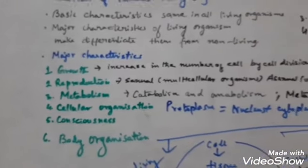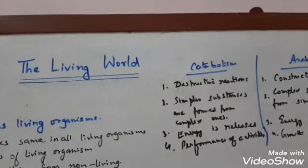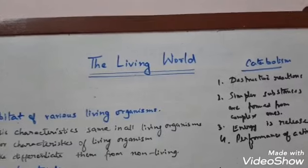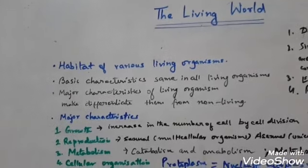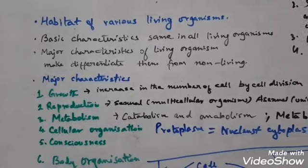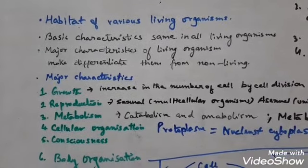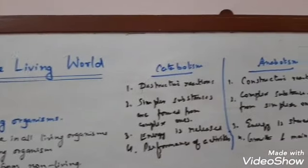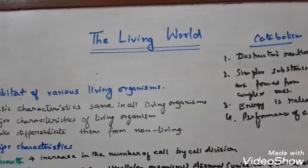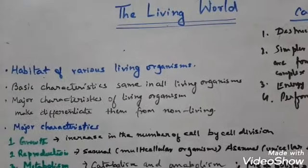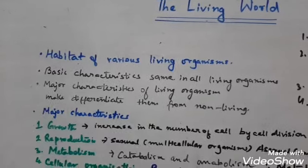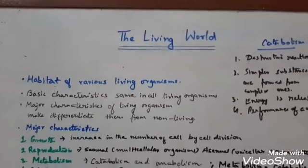I hope you understood the introductory part of Class 11 Chapter 1: The Living World. I have discussed all the basic characteristics that define a thing as living, compared living and non-living objects, given some exceptions, and discussed catabolic and anabolic pathways. This chapter is divided into three parts: this introductory part, the second part on systematic taxonomy, and the third part on taxonomical aids. Keep watching for the further videos.